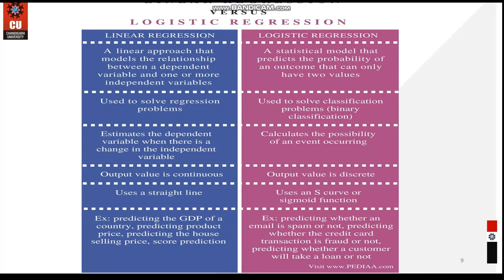The key differences between linear and logistic regression are: linear regression models the relationship between dependent and independent variables, while logistic regression predicts the probability of an outcome with two possible values. Linear regression solves regression problems; logistic regression solves classification problems. Linear regression estimates the dependent variable based on changes in the independent variable, while logistic regression calculates the probability of an event. The output of linear regression is continuous; logistic regression output is discrete. Linear regression uses a straight line; logistic regression uses an S-curve.